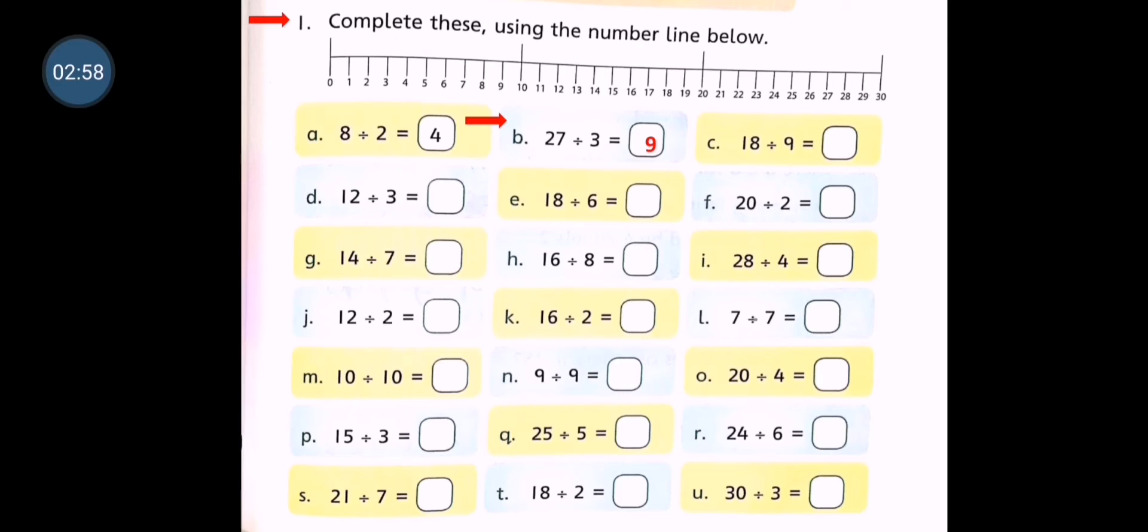27 comes with 3 nines are 27. Okay, now we will do part C.